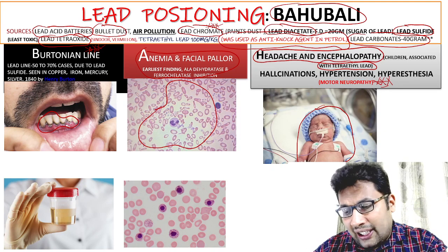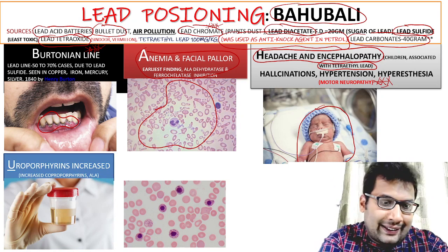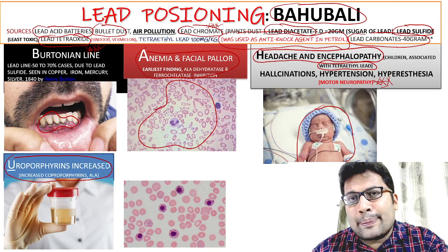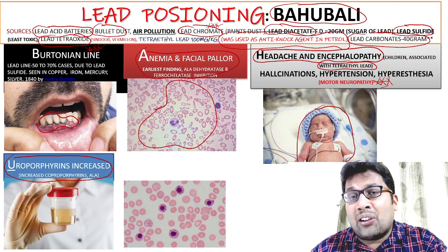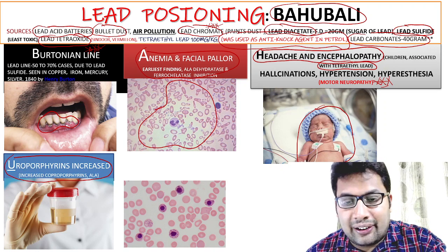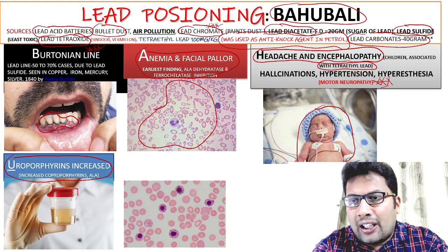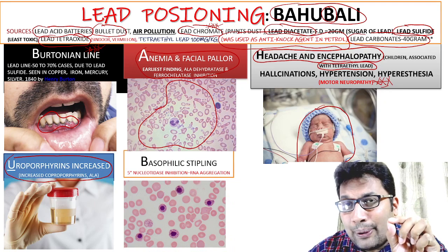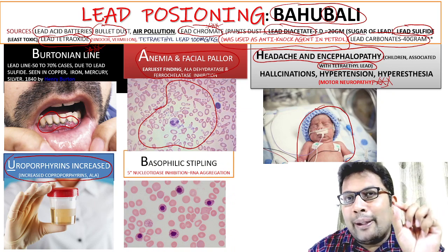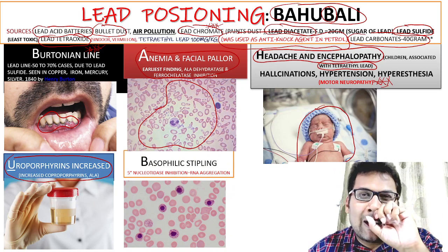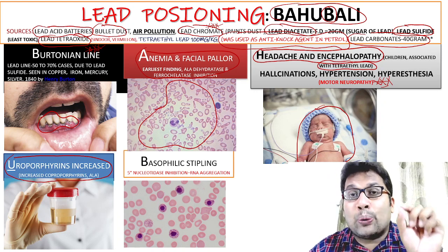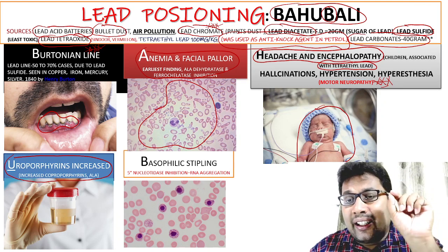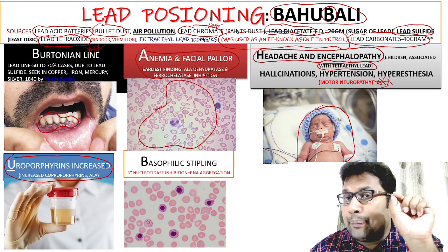U stands for increased uroporphyrins — for example, coproporphyrins and uroporphyrins are all increased. There is also an increased level of delta-aminolevulinic acid. The second B in BAHU stands for basophilic stippling, which occurs due to inhibition of the 5'-nucleotidase enzyme, causing RNA aggregation that leads to basophilic stippling. So BAHU covers: Burtonian line, anemia, encephalopathy and headache, uroporphyrins increased, and basophilic stippling.